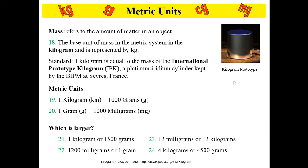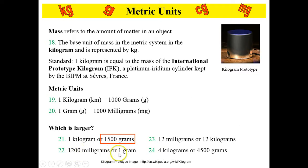Number 19: just like with meters, we need to know conversions. One kilogram equals 1,000 grams, and one gram equals 1,000 milligrams. So, which is larger — one kilogram or 1,500 grams? Well, if one kilogram equals 1,000 grams, then 1,500 grams is the larger unit. Number 22: 1,200 milligrams or one gram? If one gram equals 1,000 milligrams, then 1,200 milligrams would be larger.